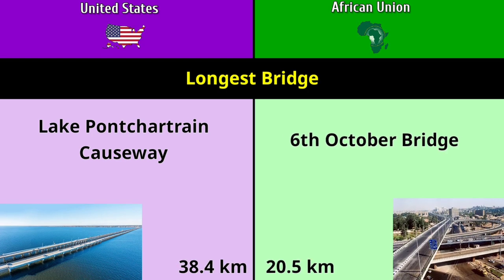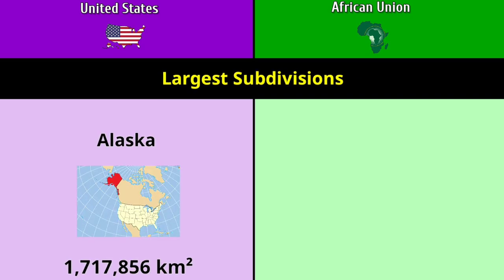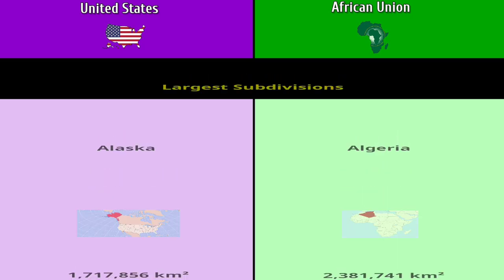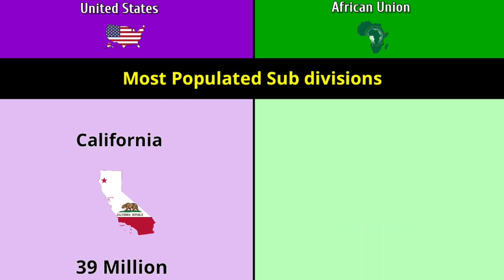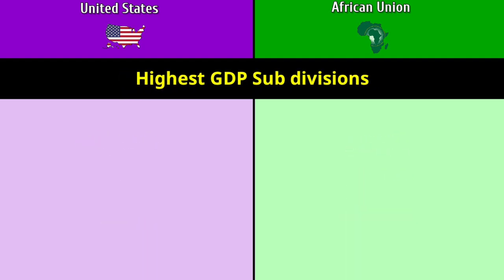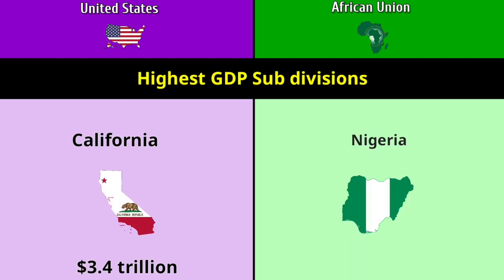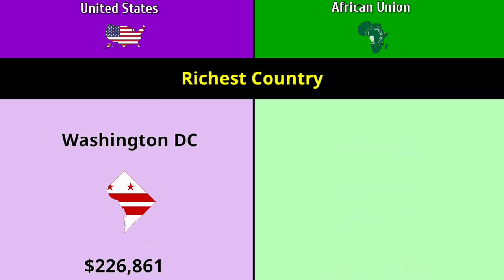Largest subdivision: Alaska at 1.71 million square kilometers versus Algeria at 2.38 million square kilometers. Most populated subdivision: California at 39 million versus Nigeria at 215 million. Highest GDP subdivision: California at 3.4 trillion dollars versus Nigeria at 504 billion dollars. Richest country: Washington DC at $226,861 versus Seychelles at $17,693.